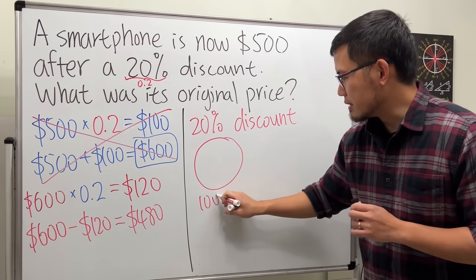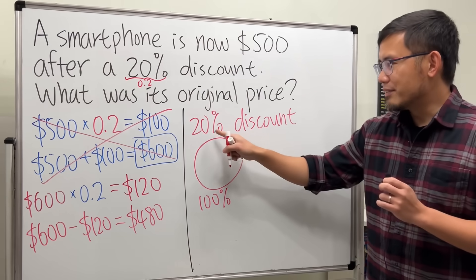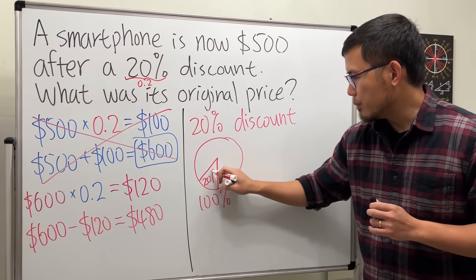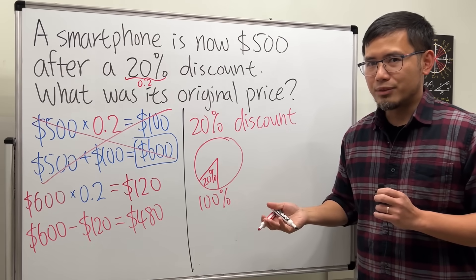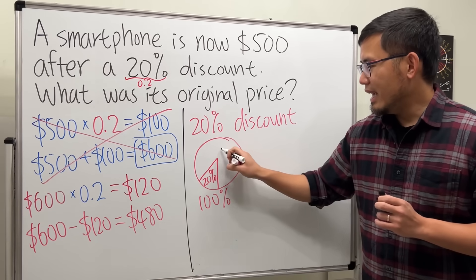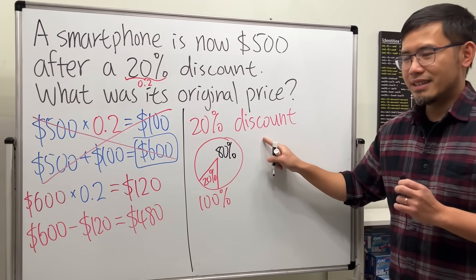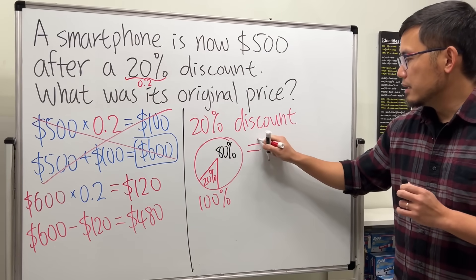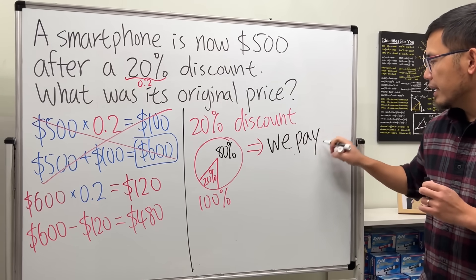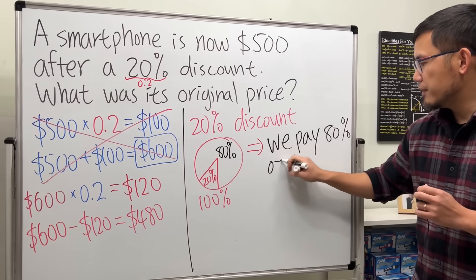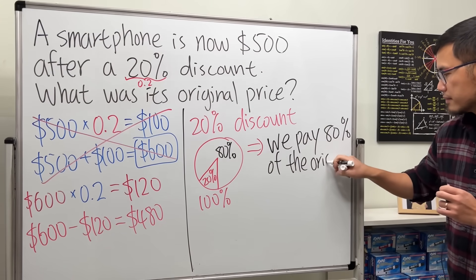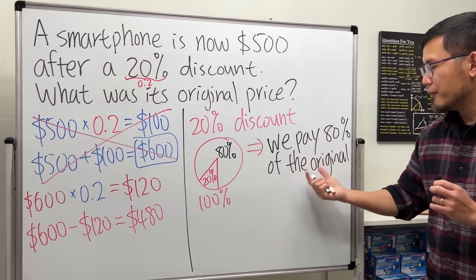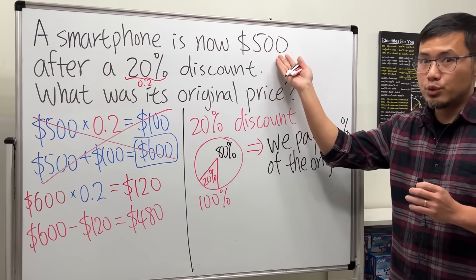The answer is 100%. Let me draw a picture — this right here is 100%. But now we have a 20% discount, so you can think about it like: you don't have to pay that 20% anymore. So what percent do we have to pay? The remaining is 80%, because together we have to get 100. When we have a 20% discount, this means we pay 80% of the original.